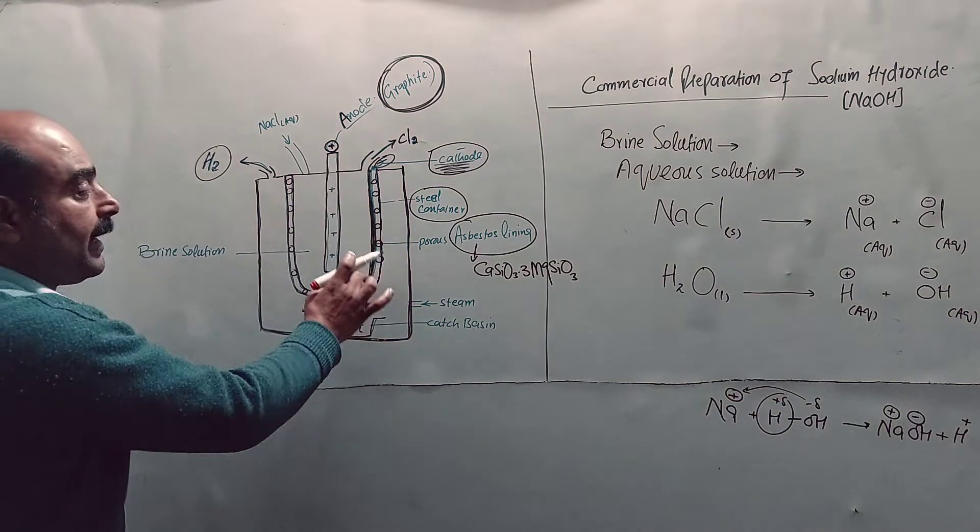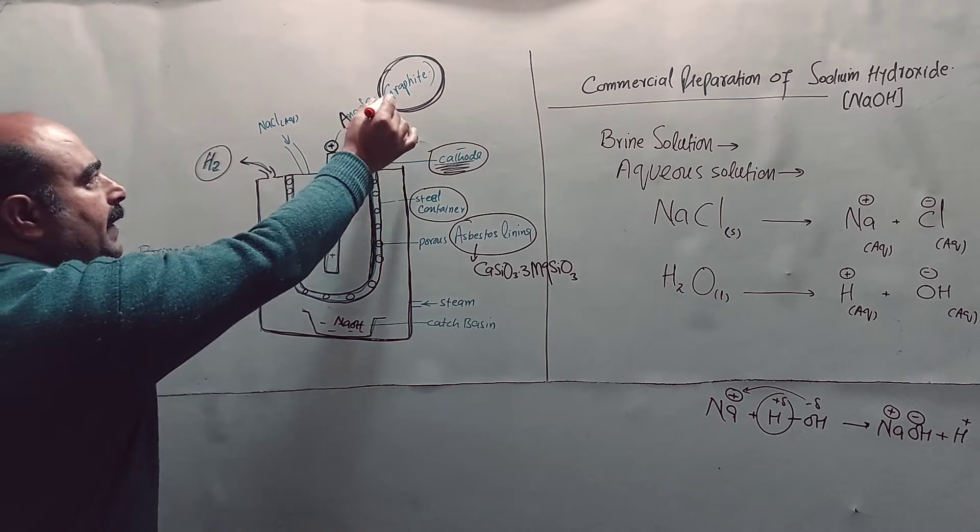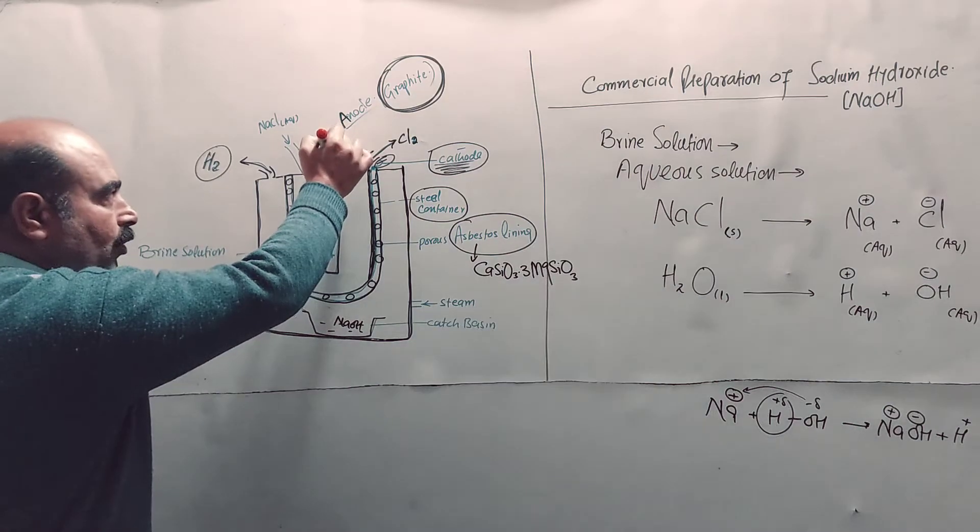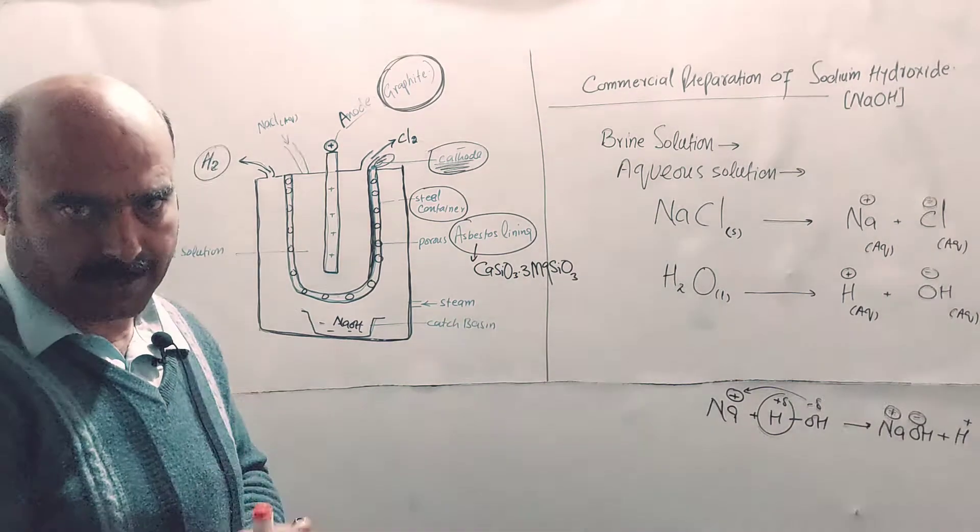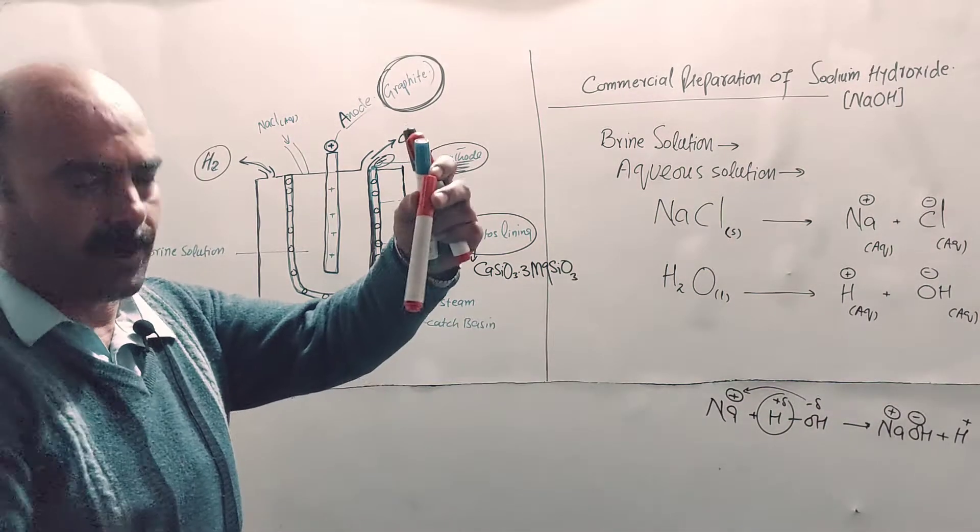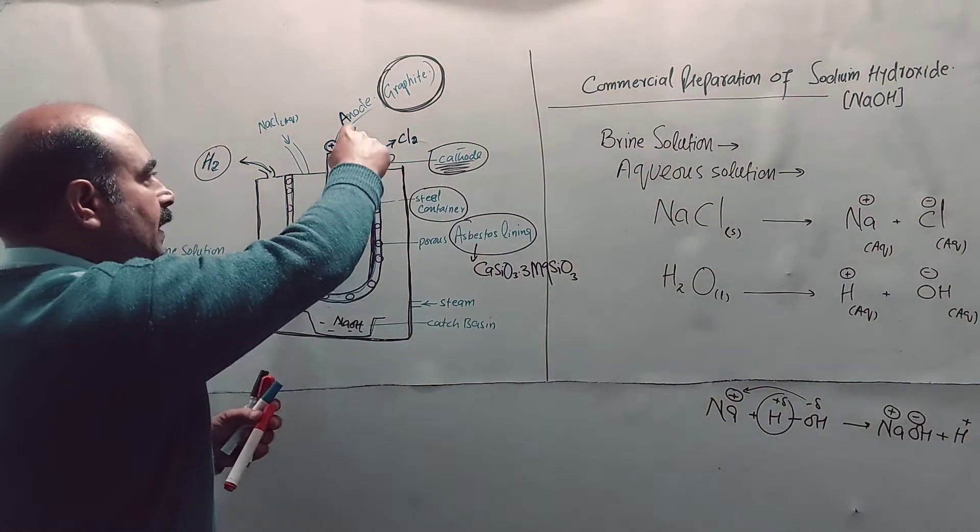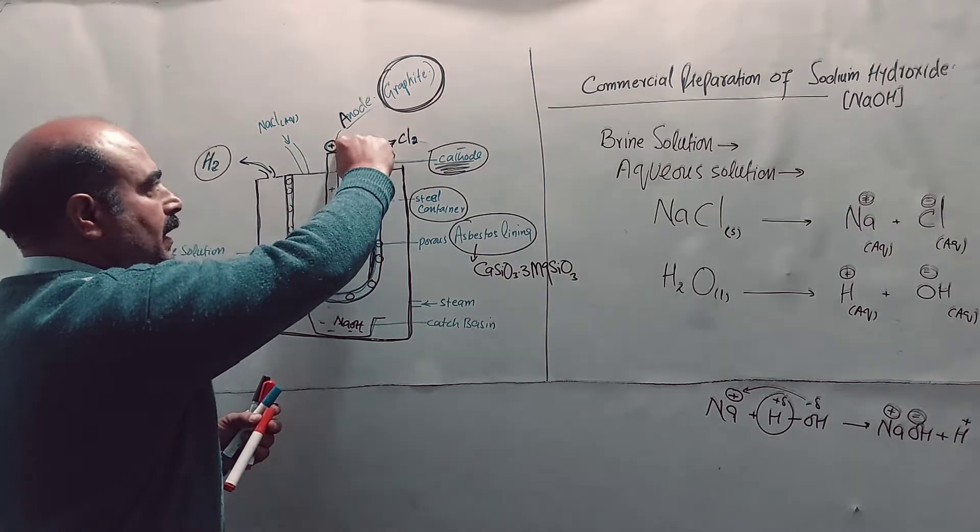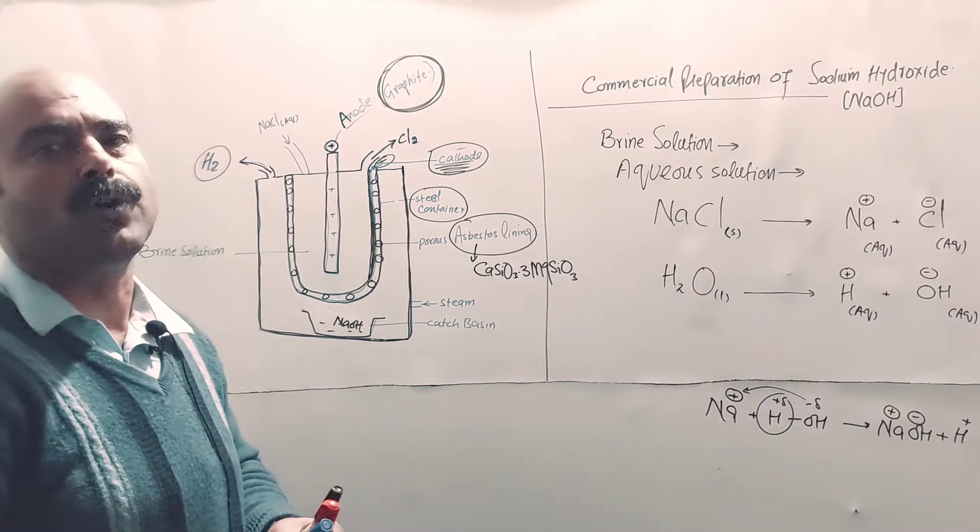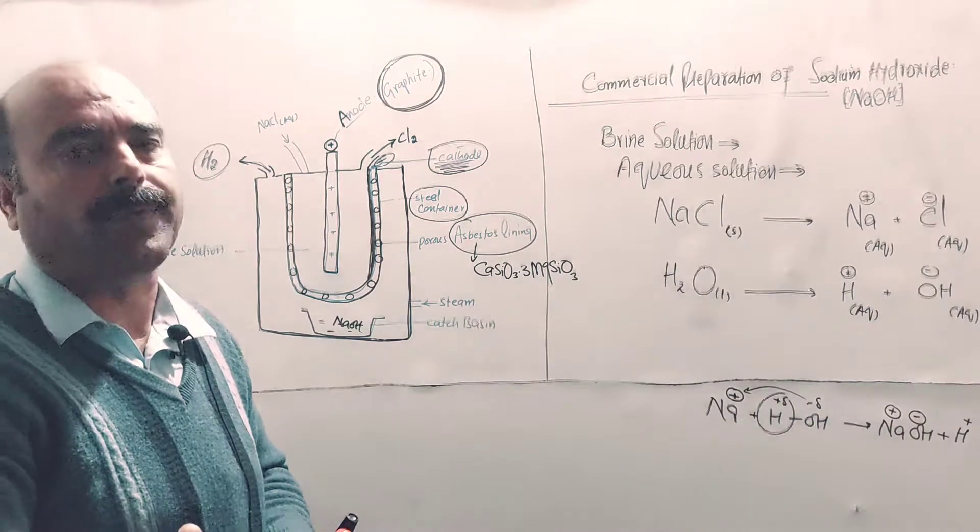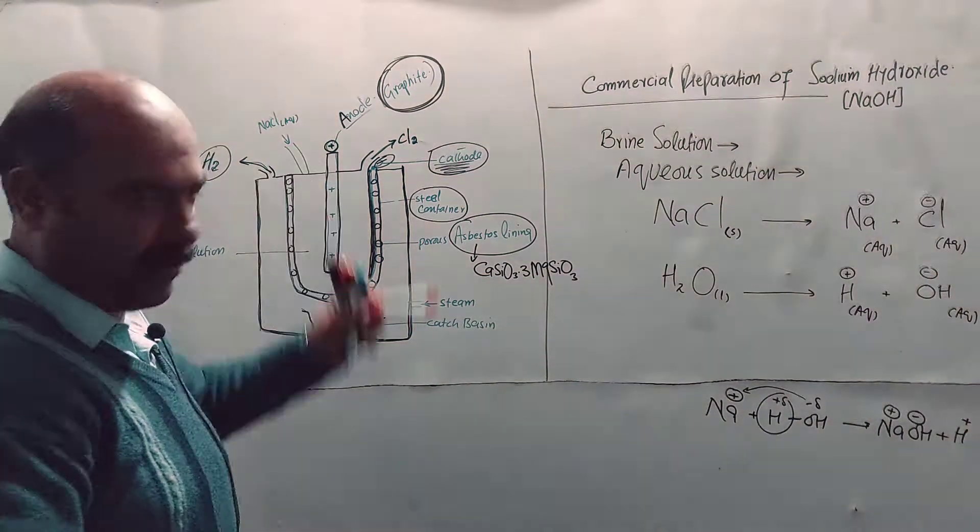Inside this cathode, graphite rods act as anodes suspended from the top. They are connected to the positive terminal of the battery, carrying positive charge. Graphite is a good conductor, an allotropic form of carbon, used as the anode.